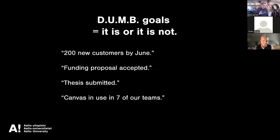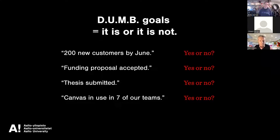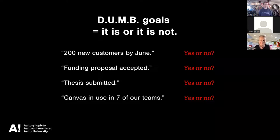If we really try to make DUMB goals — doable, understandable, measurable, beneficial — it's all about making goals where we're quite clear whether we've reached them or not. '200 new customers by June.' 'Our funding proposal is accepted.' 'My thesis is submitted.' These are less ambiguous. But why do we make ambiguous goals? Reasons include: it's actually complex and difficult; it's not my job; there are too many stakeholders; you can't put a number on it; professionals say 'we'll know when we get there'; we've never done it before; or no one actually asked us to do it.